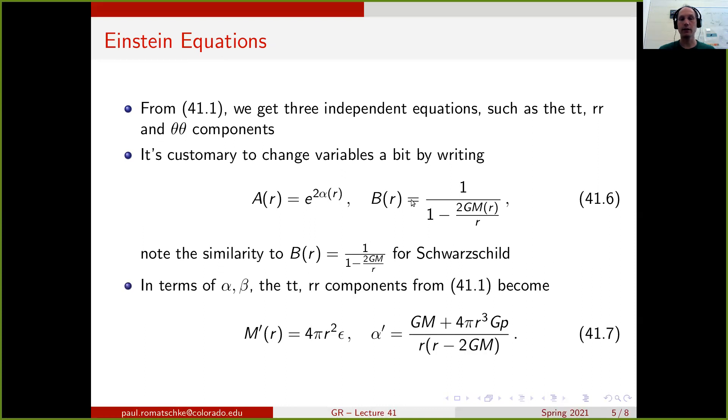So in terms of these new variables alpha and M, the t-t and r-r components of the Einstein equations can be written in the following form. The derivative of the function M with respect to r is given as 4 pi r squared times epsilon, and the derivative of the function alpha is given as GM plus 4 pi r cubed GP over r times r minus 2GM.